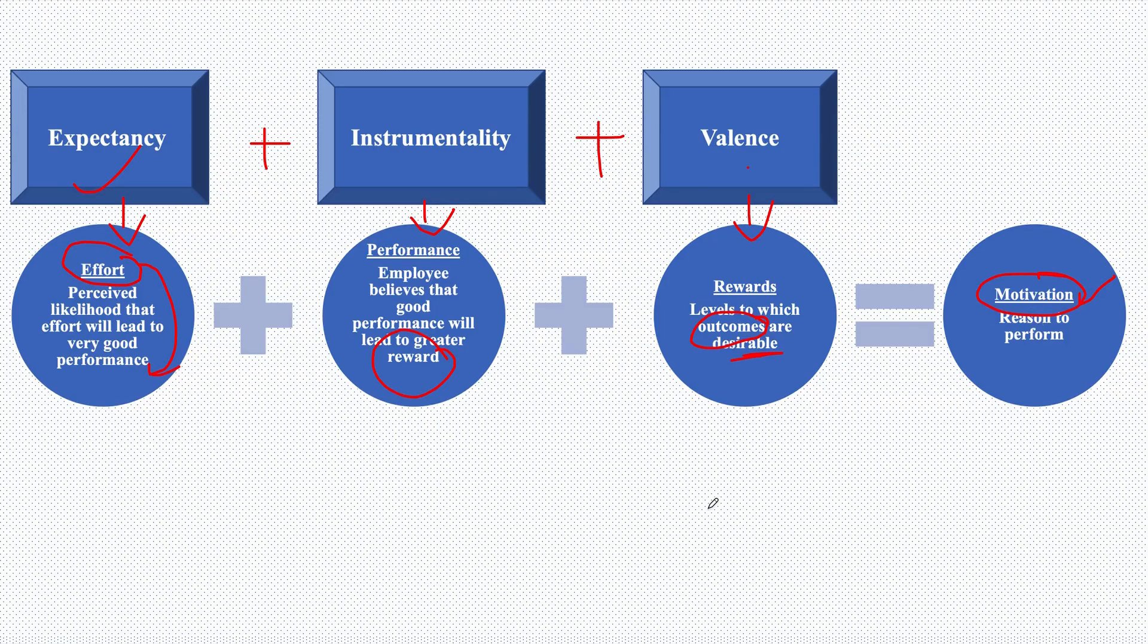Motivation is the key factor over here. All these factors are equally important, but whatever we are doing is basically for motivation and this is basically our reason to perform. So this is your expectancy theory by Victor Vroom. I hope this is clear with you. Thank you so much.